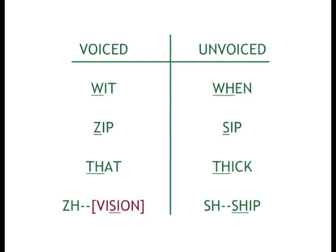Here is the last group of consonant pairs: wit, when; zip, sip; that, thick; juh, shuh — like in 'vision' and 'ship.' Several different letters can make the sound of 'juh.' In the word 'of,' the O is schwa'd to A and F has its consonant pair sound of V.